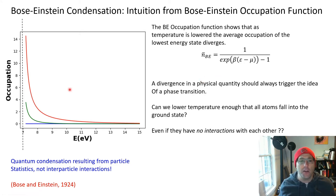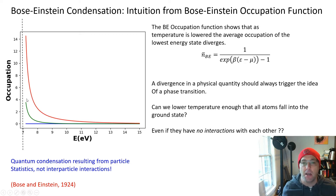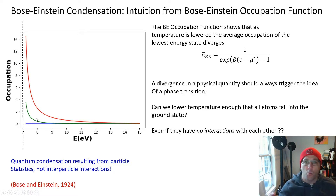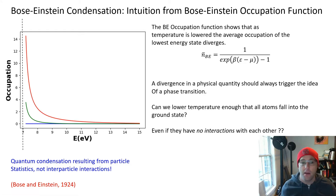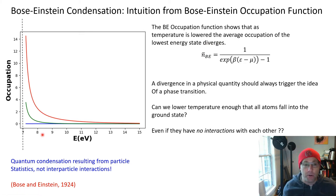As you lower the temperature in an ideal Bose gas, you would reach a point where this divergence takes over and dominates the behavior, and there would be a phase transition. The question is: can we lower the temperature enough that all these atoms fall into the ground state and we find a new phase of matter? The really interesting point is we have a mechanism for this condensation to occur even though there are no interactions between the atoms. We start with an ideal gas where the atoms only have kinetic energy and yet still there can be a condensation into a condensed phase — a quantum condensation that is the result of Bose-Einstein statistics, not inter-particle interactions.